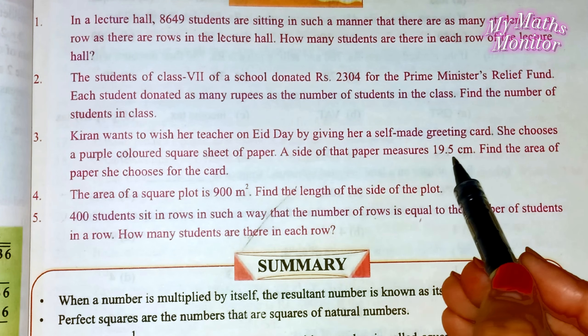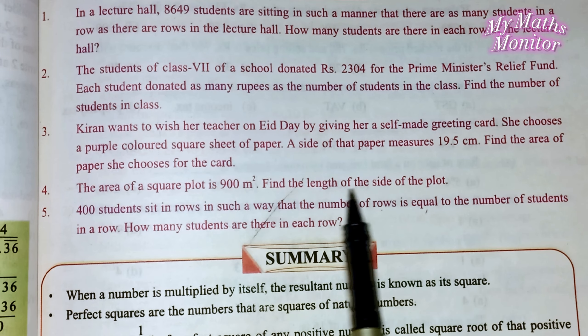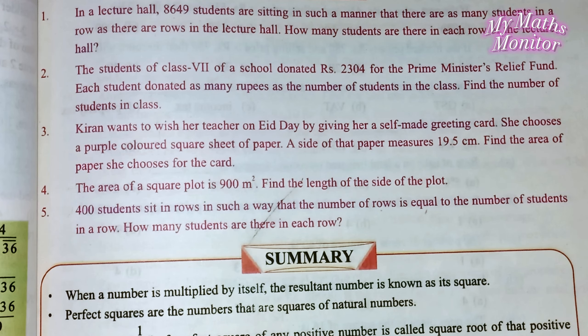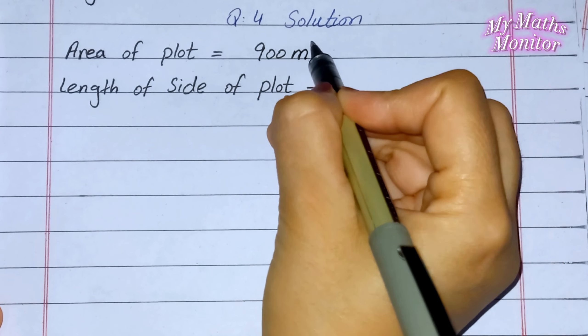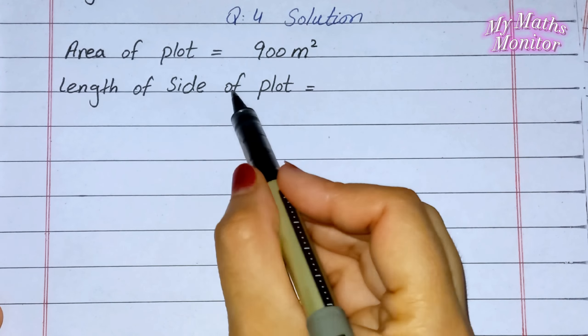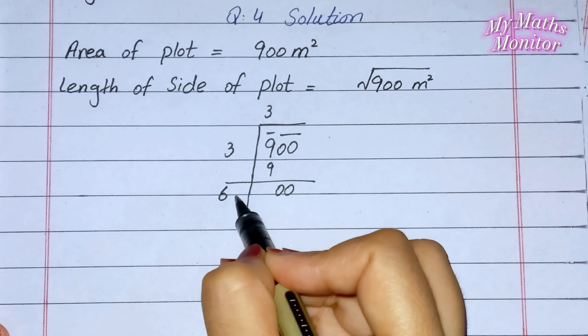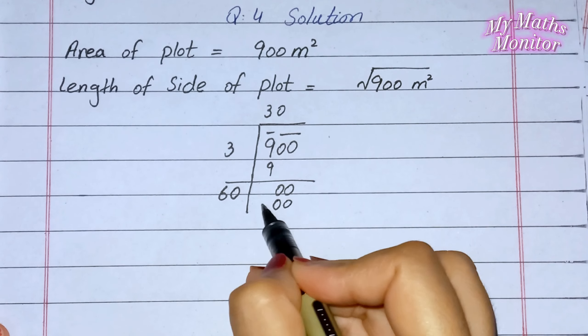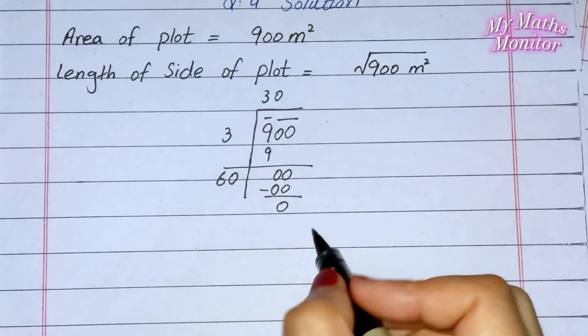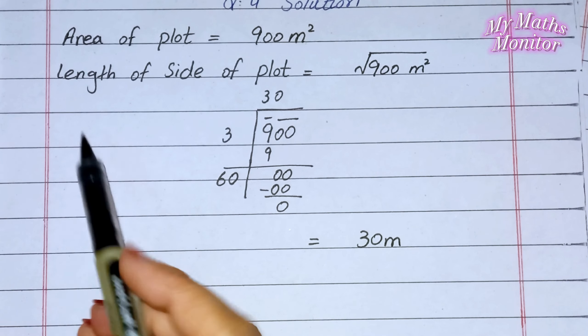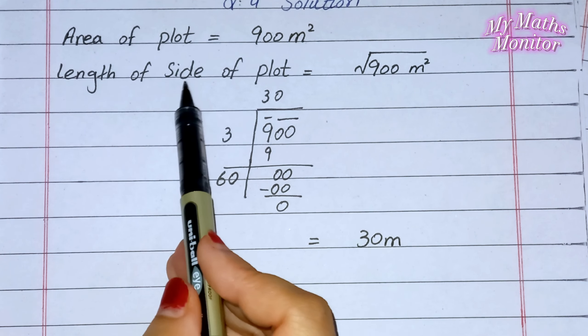Question number 4: The area of a square plot is 900 meter square. Find the length of the side of the plot. ایک square plot کا area ہے 900 m²، اب یہاں پہ معلوم کرنی ہے plot کے side کی length۔ Solution: Given — area of plot = 900 m²۔ Length of side of plot — 900 کا square root find out کریں گے، division method سے۔ 900 میں 00 first pair، 9 single value — 3×3=9، minus کریں گے 0، 3+3=6، 60×0=0، remaining 0۔ Answer: length of side of plot = 30 meters. It is the answer.